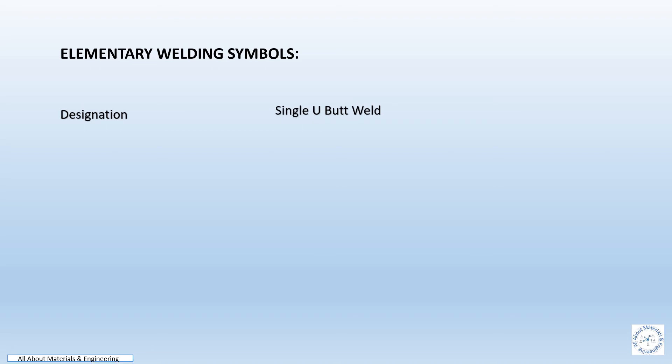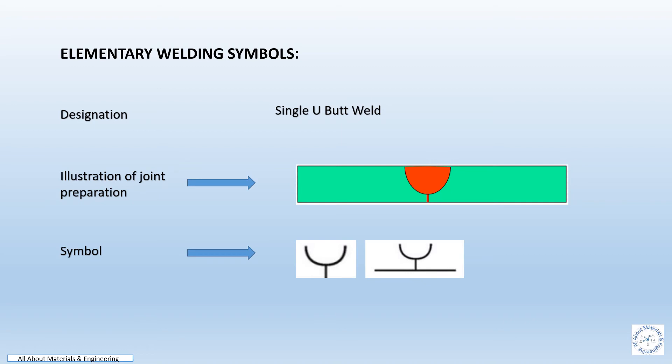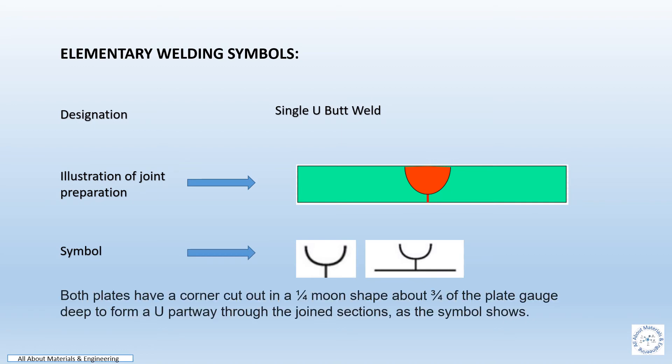Elementary welding symbol for single U butt weld. The sketch represents the illustration of the joint preparation, and the symbols are to be shown in the drawing. Both plates have a corner cut in a one-quarter moon shape, about three-quarters of the plate gauge deep, to form a U pathway through the joint section, as shown in the symbol.